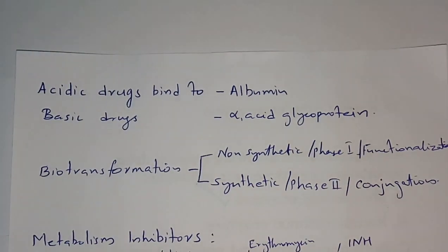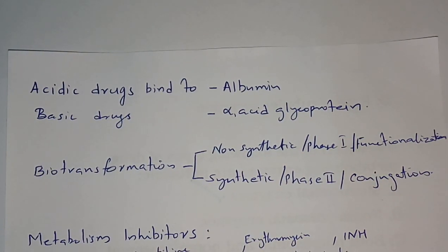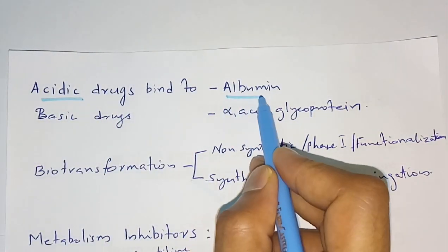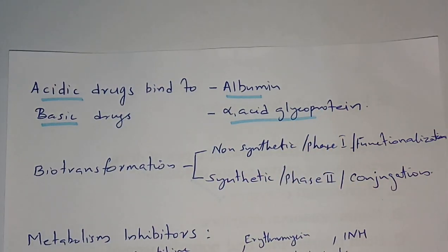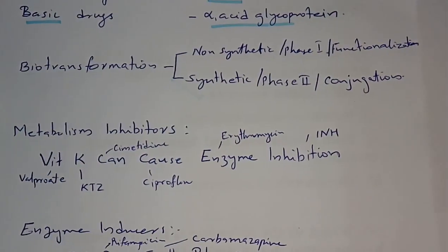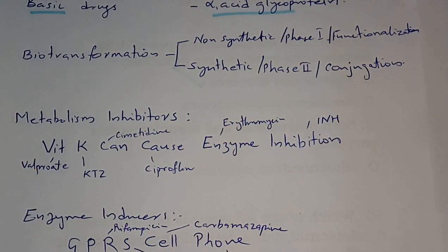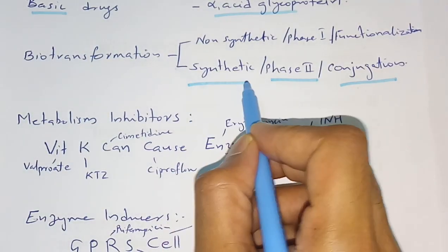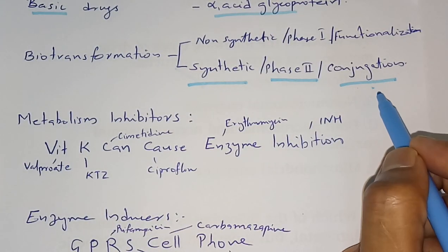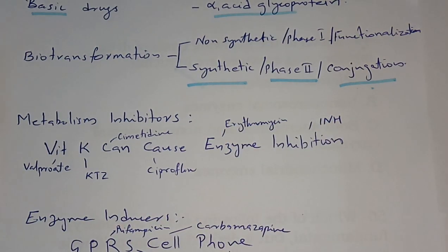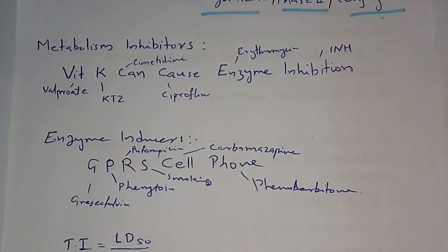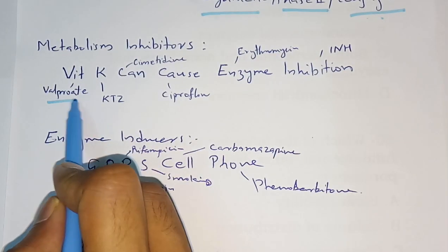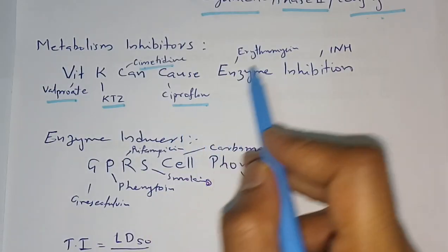Some important points: acid drugs will bind with plasma protein albumin, while basic drugs will bind with alpha-1 acid glycoprotein. Biotransformation is classified into two: non-synthetic (phase 1, also known as functionalization reaction) and synthetic (phase 2, also known as conjugation reaction). Some drugs inhibit the metabolism of another drug — examples are valproate, ketoconazole, cimetidine, ciprofloxacin, erythromycin, and INH.